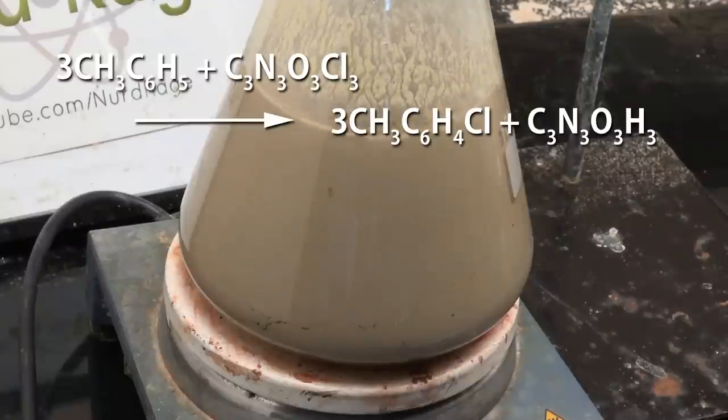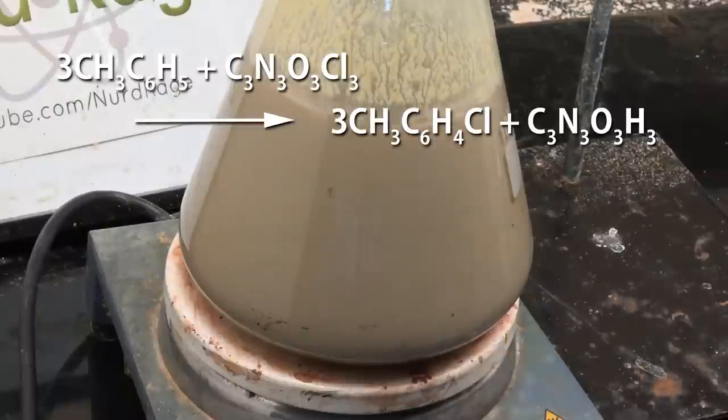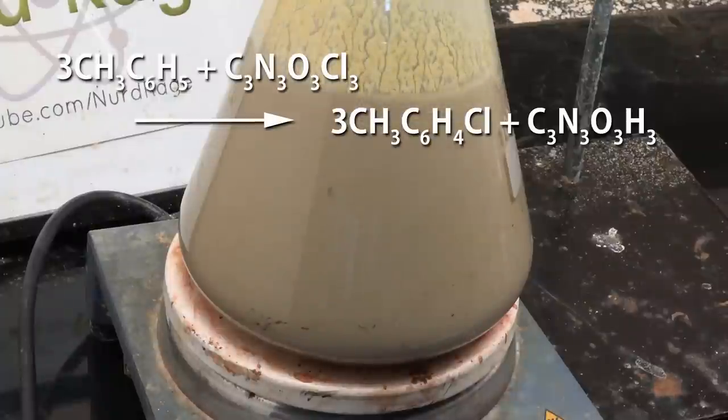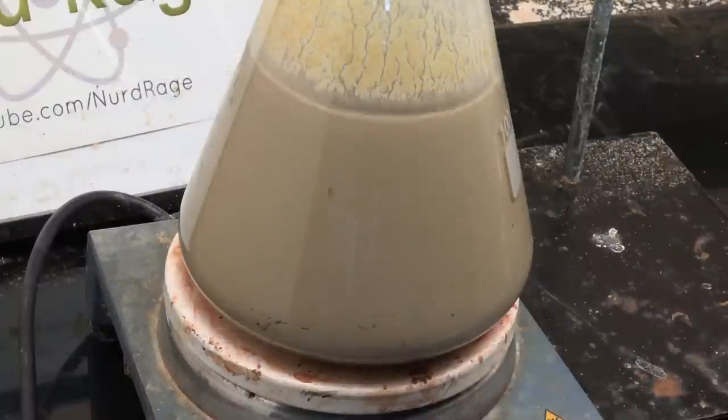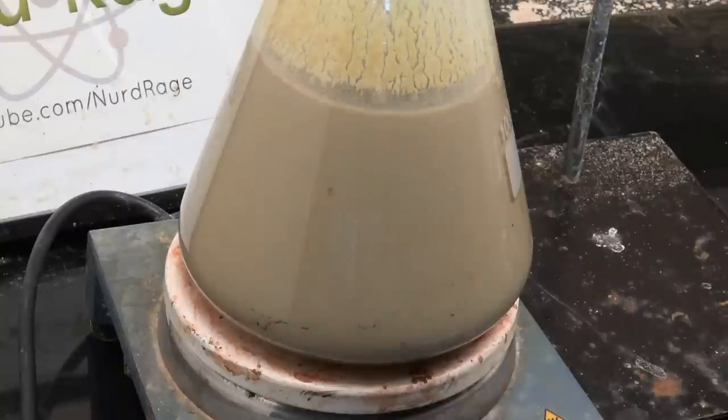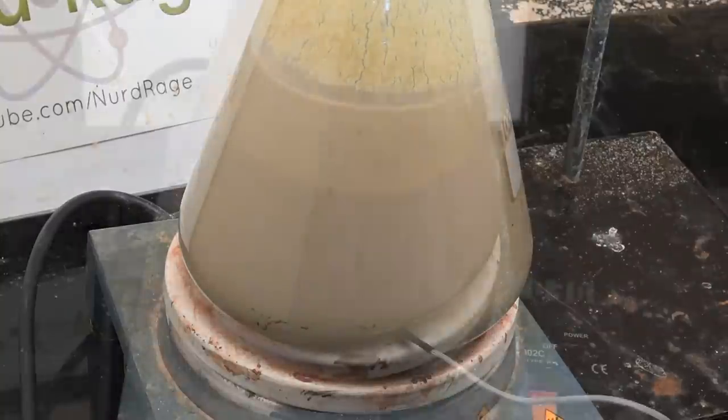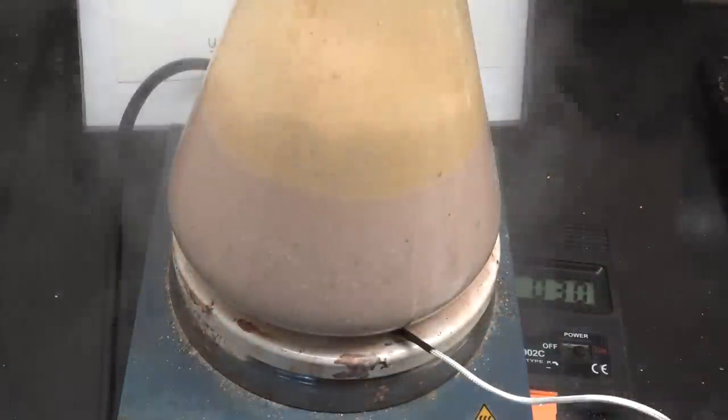What's happening is the trichloroisocyanuric acid is reacting with the toluene to directly form chlorotoluene and cyanuric acid. The ferrous chloride serves as a catalyst. As you can see no gases are produced or consumed so this requires a much simpler setup to perform without a complicated gas generator. Now you need to go slowly when adding the trichloroisocyanuric acid because the reaction is very exothermic and going too fast will result in a thermal runaway.